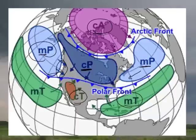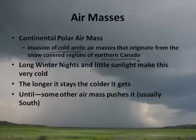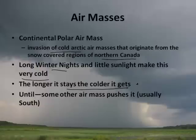Continental polar air masses are invasions of cold Arctic air that originate from the snow-covered regions of northern Canada. Long winter nights and little sunlight make this a very cold air mass. The longer it stays, the colder it gets. When it gets pushed southward into the United States during winter months, that's when we get these super cold air masses.